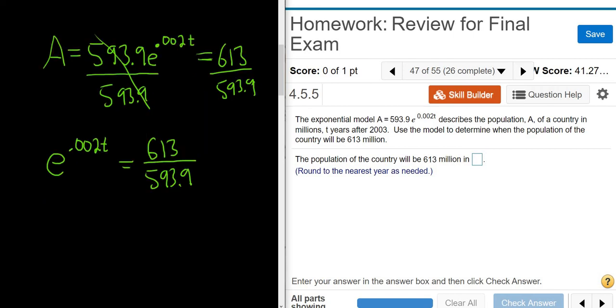So we have to get rid of the e. So what we can do is we can take the natural log of both sides. So ln of e to the .002t equals ln, and then we have this fraction here, 613 over 593.9.